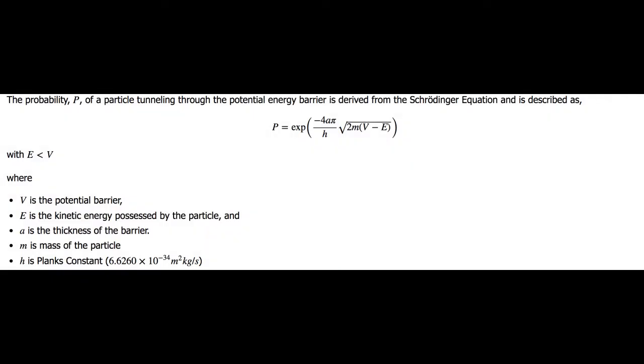The probability of finding tunneling in particles is described as p equals exponential of negative 4a pi over h, square root of 2m times v minus e, where v is the potential barrier, e is the kinetic energy, a is the thickness of the barrier, m is the mass of the particle, and h bar is the Planck constant.